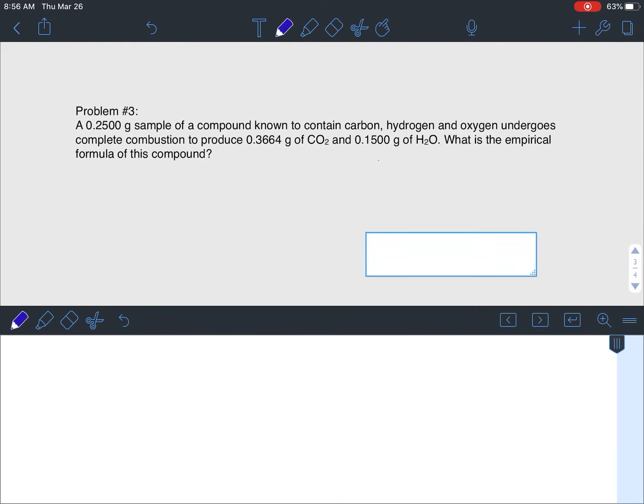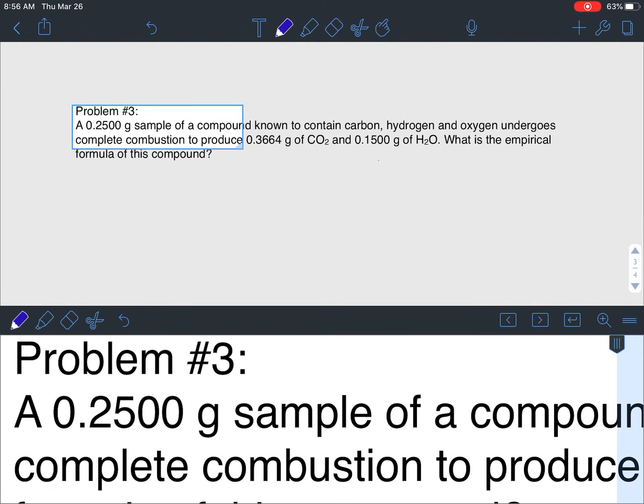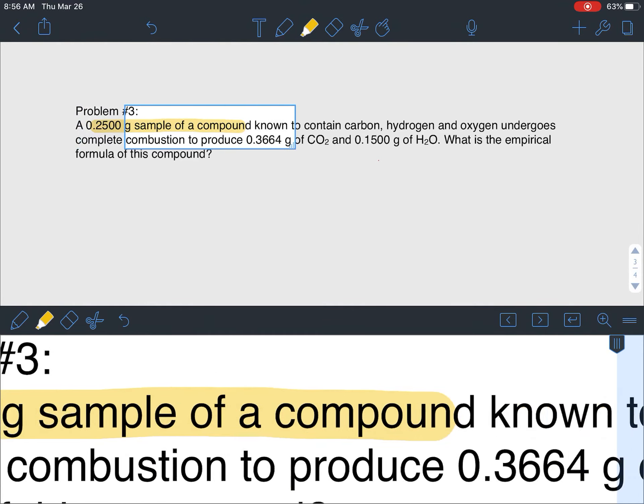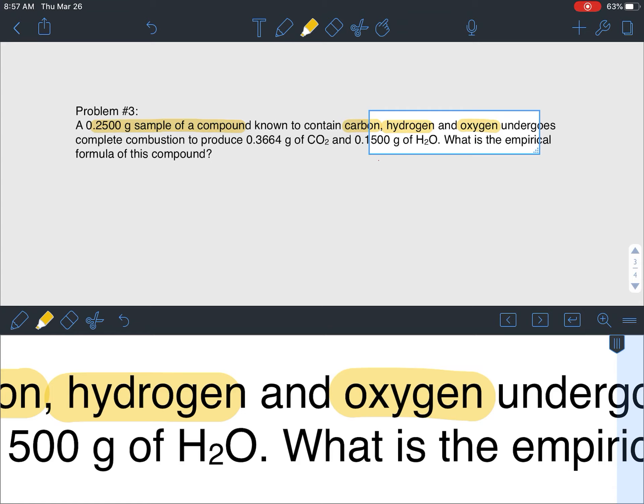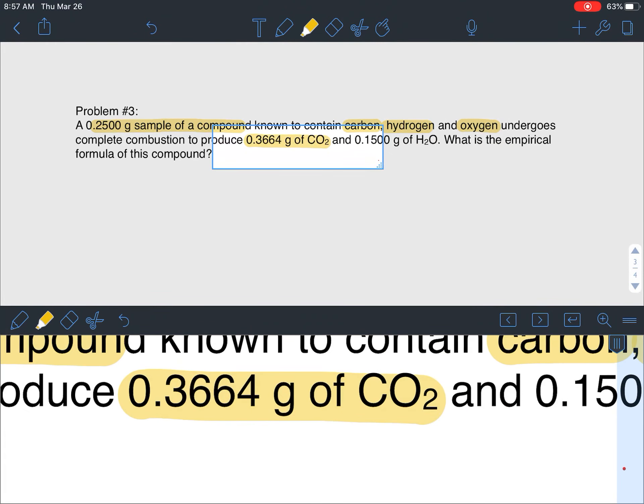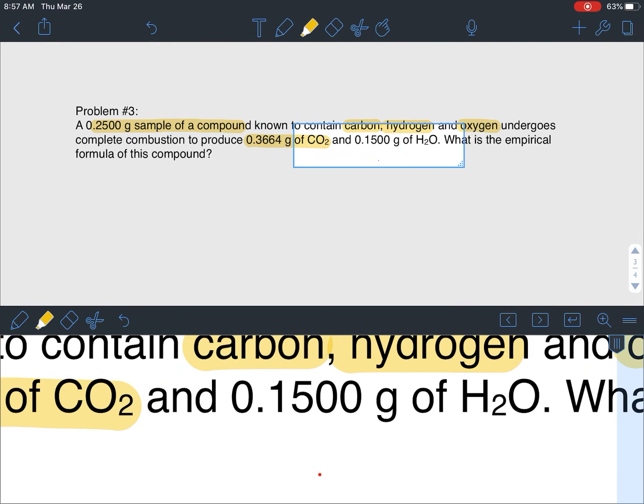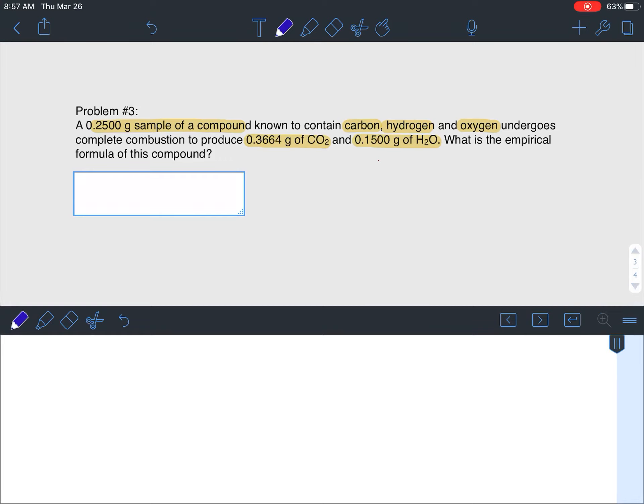Let's just do one more example problem. I'm going to scroll down to example problem number 3. A 0.250 gram sample of a compound known to contain carbon, hydrogen, and oxygen. See, they clarify there that there's these three compounds, which is good. We can calculate directly what the carbon and hydrogen masses are, we'll add those together, subtract it from that starting mass to get our oxygen mass. And then we produce 0.3664 grams of CO2 and 0.1500 grams of water.